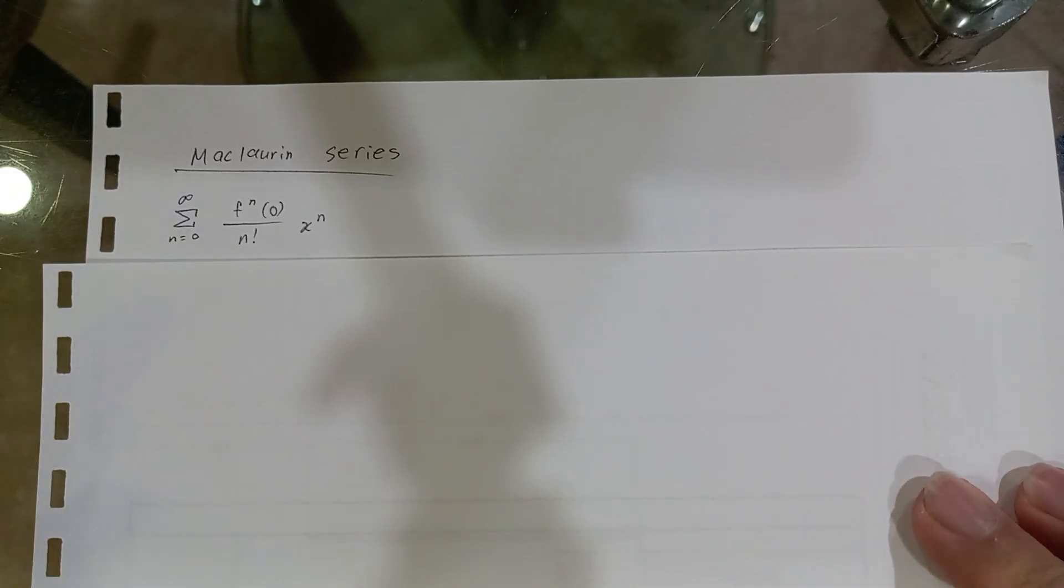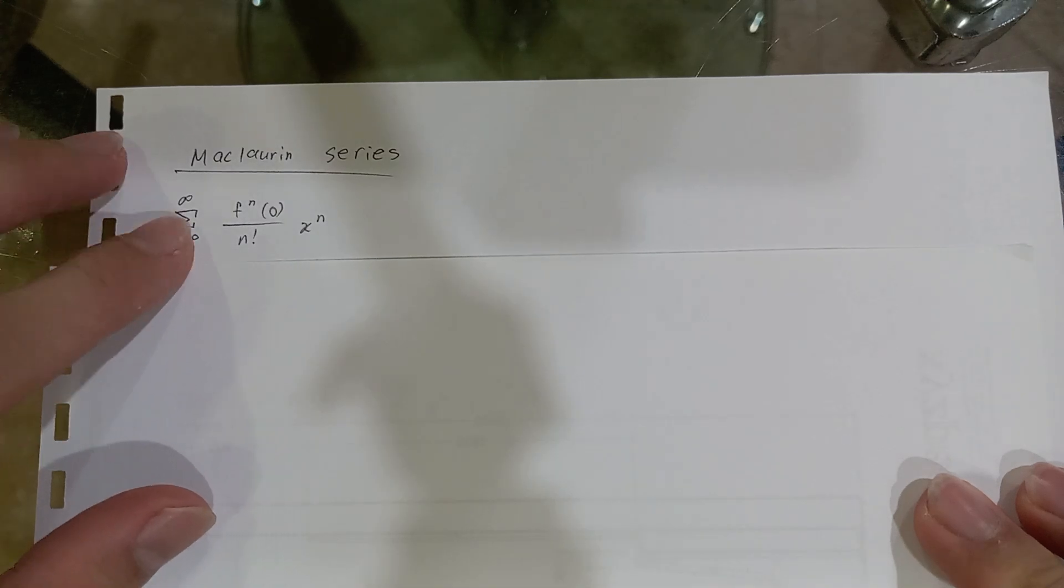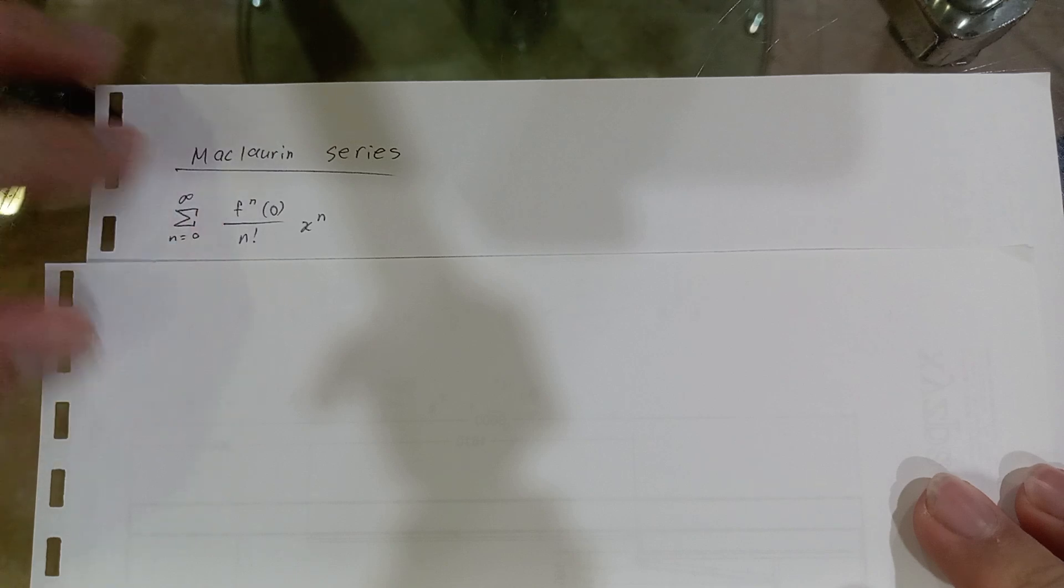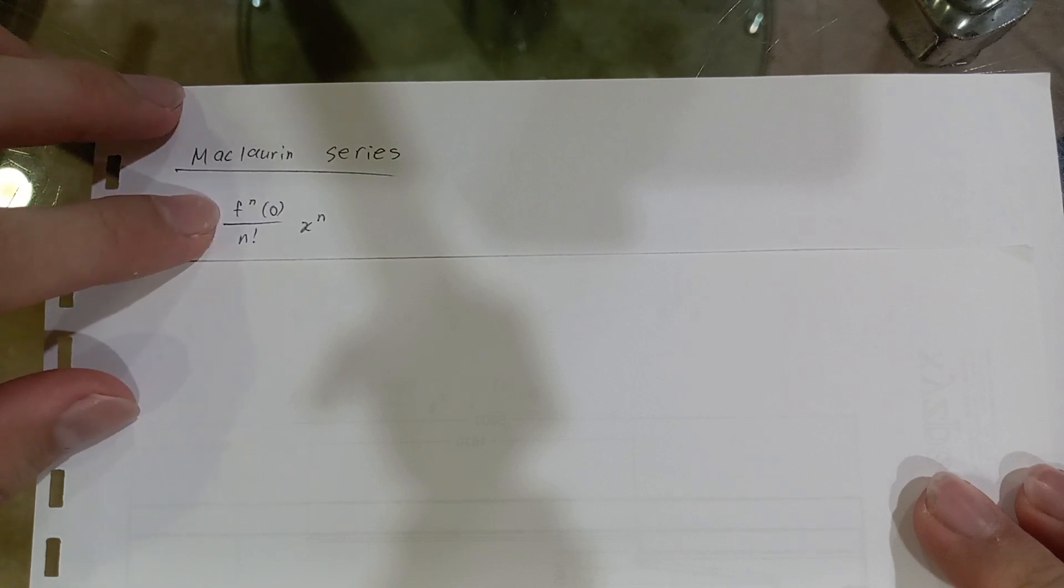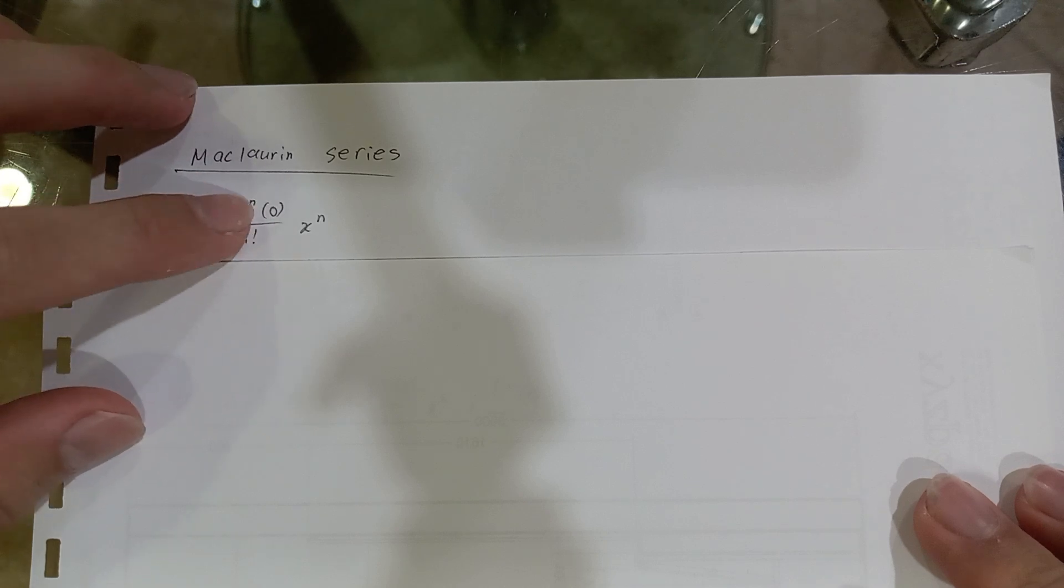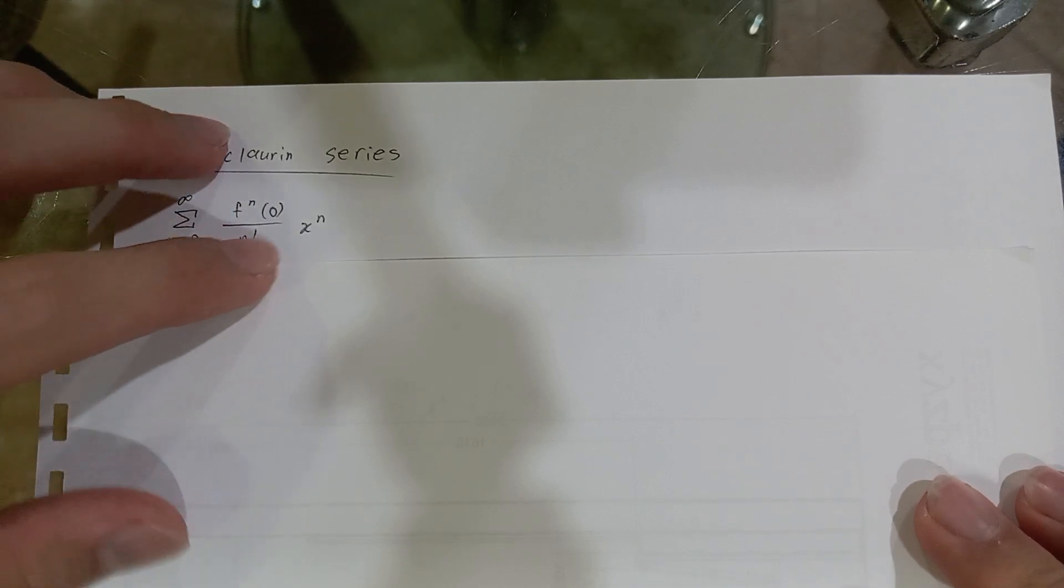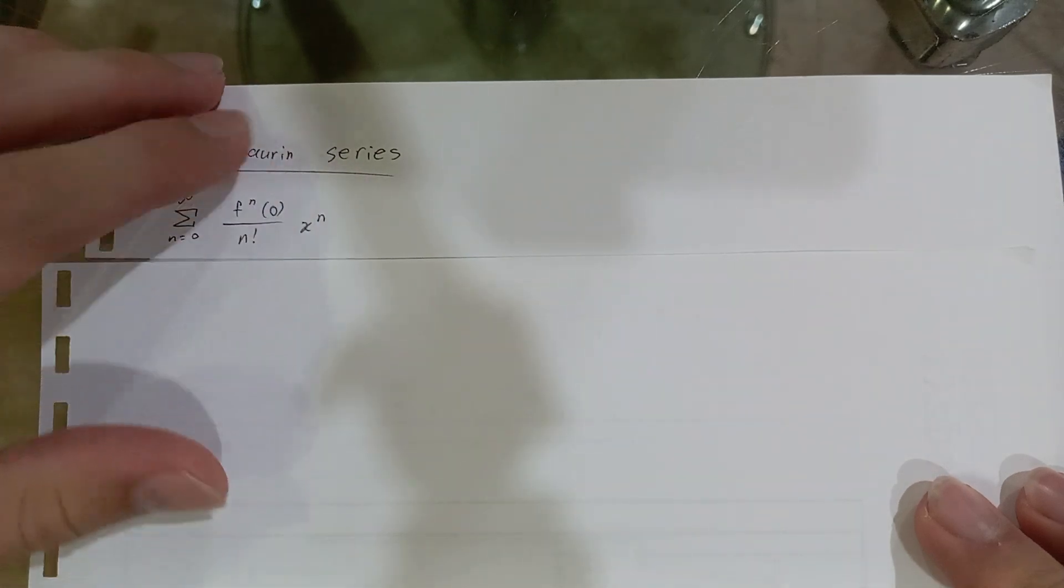Maclaurin series - what is it? It is an infinite series from the zeroth term to infinity of the function f and its nth derivative at 0, divided by n factorial, multiplied by x raised to the nth power.